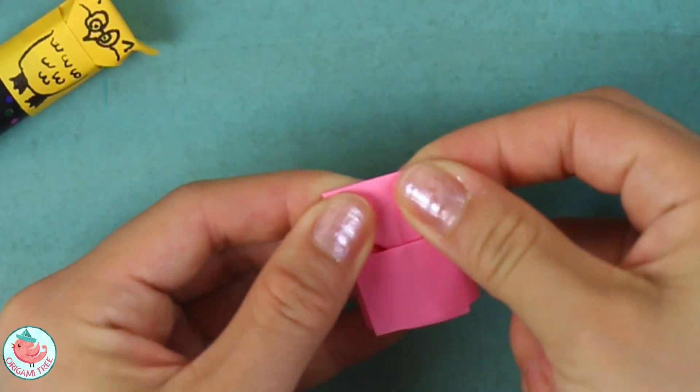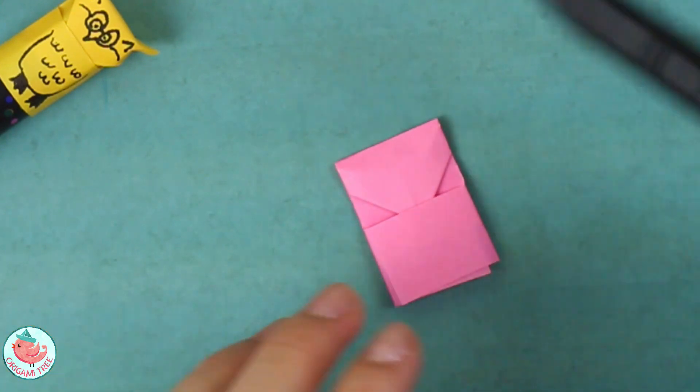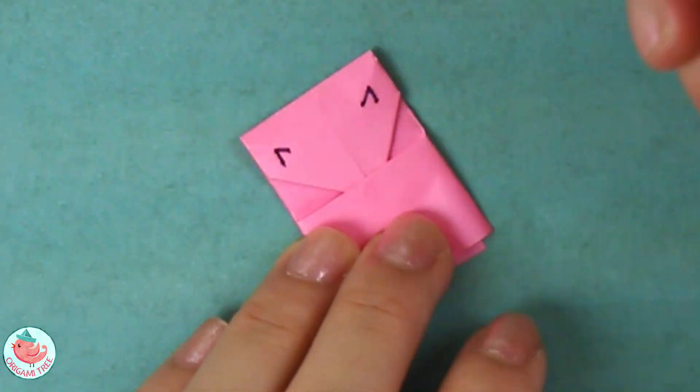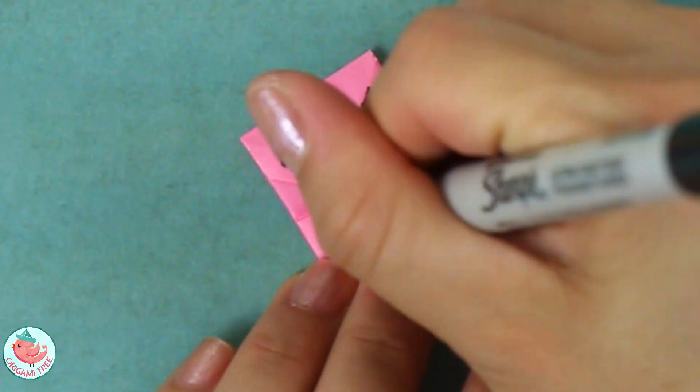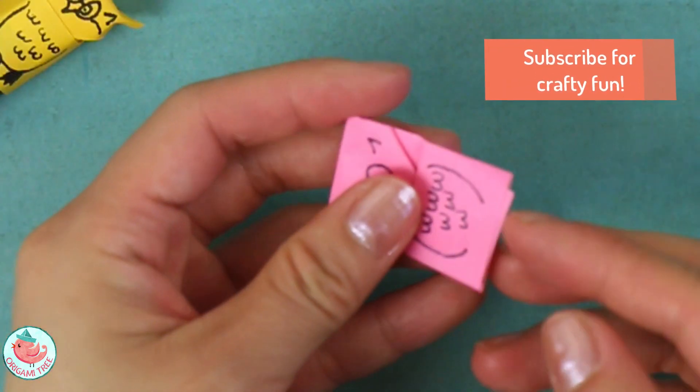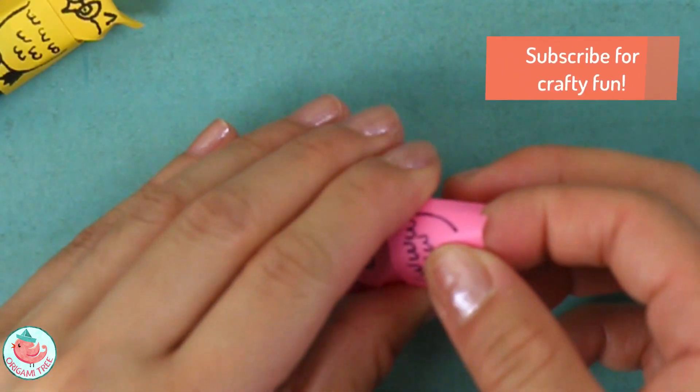After that you want to flatten it and now you have an idea of where the ears are going to be. Now you can decorate it, then stick your finger back into the owl, puff back the ears and your little finger puppet slash pencil topper is complete.